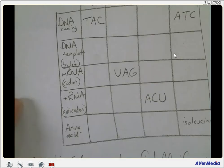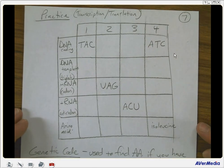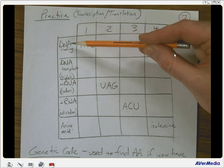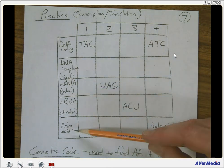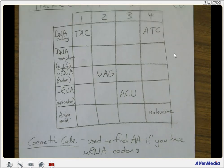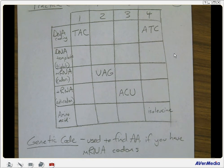Now that we have a little practice figuring out the amino acids, we're going to put everything together. Copy down this table — this is page 7 in your notes — practice on transcription and translation. We have DNA coding strand, DNA template strand, messenger RNA codon, transfer RNA anticodon, and the amino acid it codes for. Take about five minutes to fill in this table. Make sure you also note in your notes what the genetic code is used to find amino acids if you have the messenger RNA codons. Pause if you need time to fill in the table.